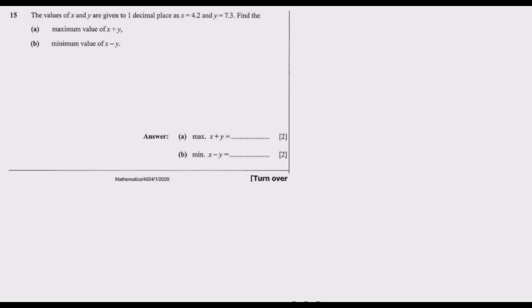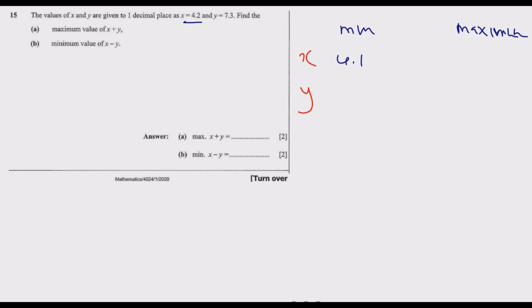Let's find the minimum and maximum values that x and y can take to two decimal places. The minimum value that x can take is 4.15, such that when rounded to one decimal place it becomes 4.2. The maximum it can take is 4.24, which also rounds to 4.2.